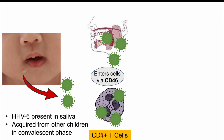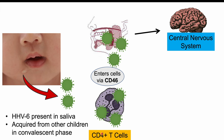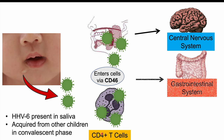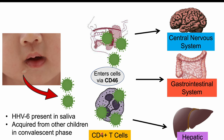This virus can also traverse the blood-brain barrier and enter the central nervous system, which we'll discuss further shortly. In more rare cases, it can also invade the gastrointestinal system and the hepatic system. It's also important to note that because most young children are exposed to this virus, many cases are asymptomatic — they're exposed but show no signs or symptoms.